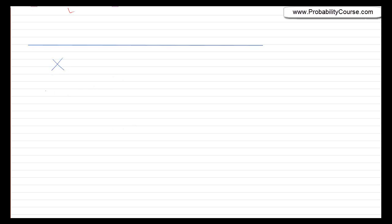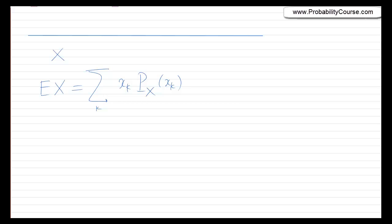We have discussed the expected value for discrete random variables. Specifically, we saw that if you have a discrete random variable X, the expected value of X can be obtained by the sum over all x_k's of the probability that X equals x_k. Using what I just said, I can write a similar formula for continuous random variables. If I have a continuous random variable X, the expected value — I replace the sum by an integral.